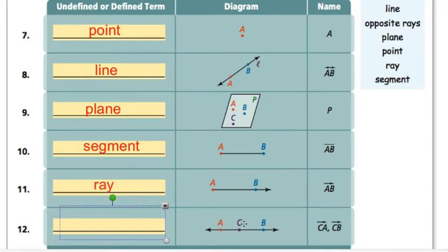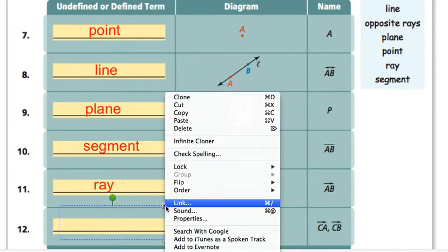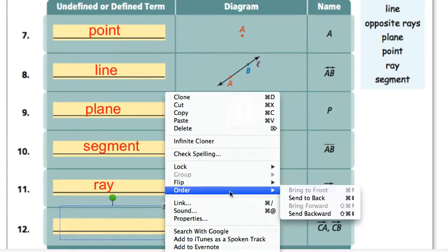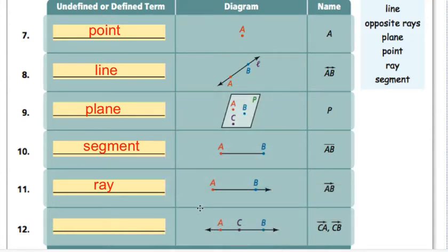And the one after that, we have one end point and one arrow on the end, that one's a ray. And the last one, where we have, it looks like a line, but there's three points in there. The thing that gives this one away is there's two rays that are labeled, and since they share the same end point, those are called opposite rays.